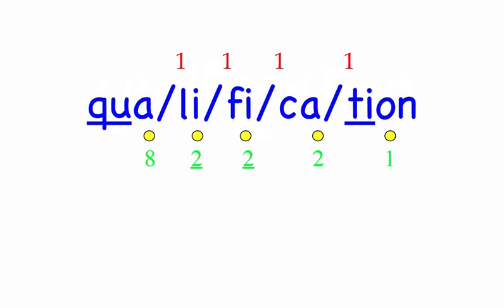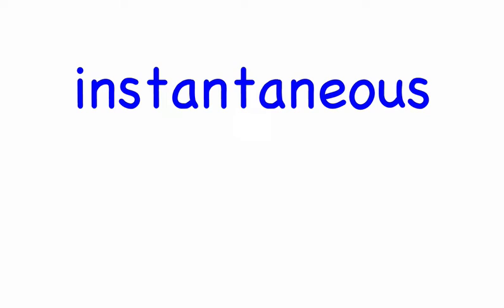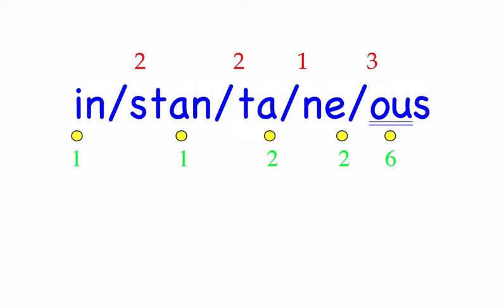Row five. Instantaneous. I made an instantaneous decision. This is a five-syllable word. First syllable: In, two sounds, I-N. Stan, four sounds, S-T-A-N. Tay, two sounds, T-A. Knee, two sounds, N-E. Us, two sounds, U-S. In-stan-tay-knee-us. Mark the word. Instantaneous.